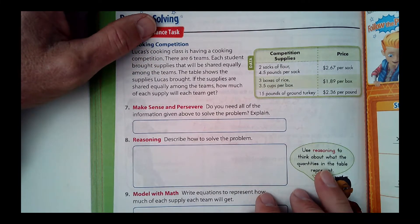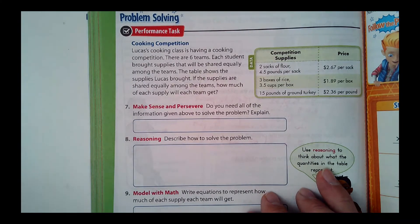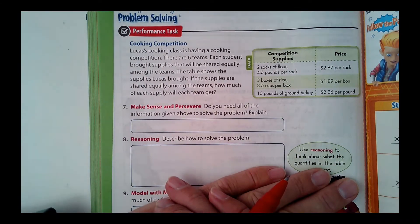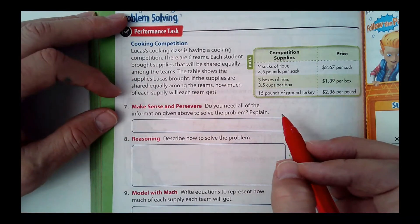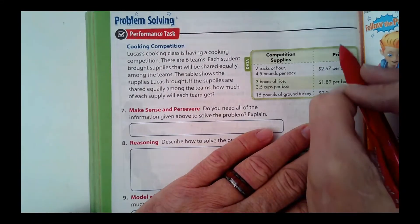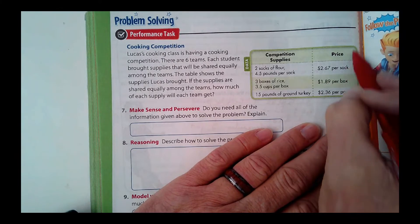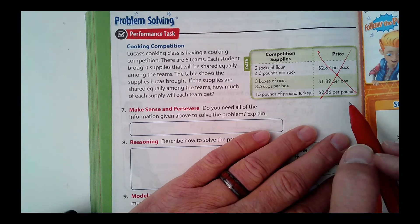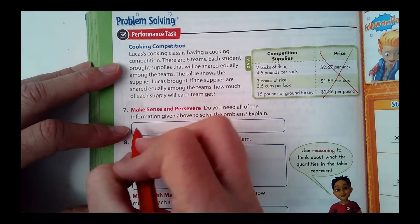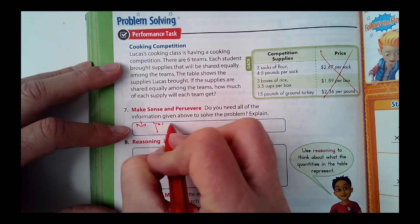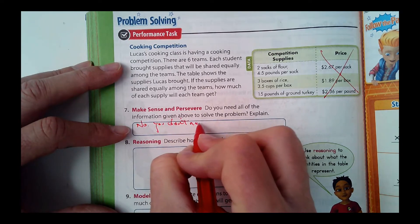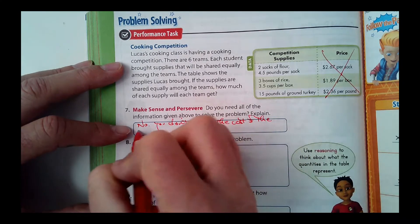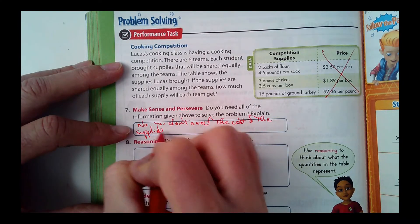Do you need all this information to solve the problem? No. What don't we need? The price. We don't need this. This is unnecessary. You can just put an X through it. They're not asking us about money, they're asking about quantities. So do you need all the information given to solve the problem? No, you don't need the cost. We need the quantities of the supplies.